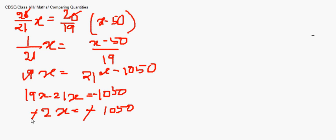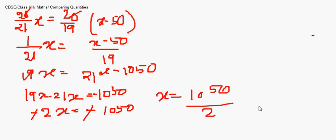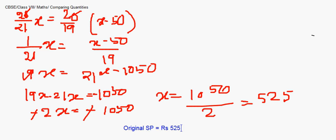Solving: x = 1050/2 = 525. Since x was assumed to be the original selling price, the original selling price is rupees 525. We will take up discount questions in the next session. Thank you.